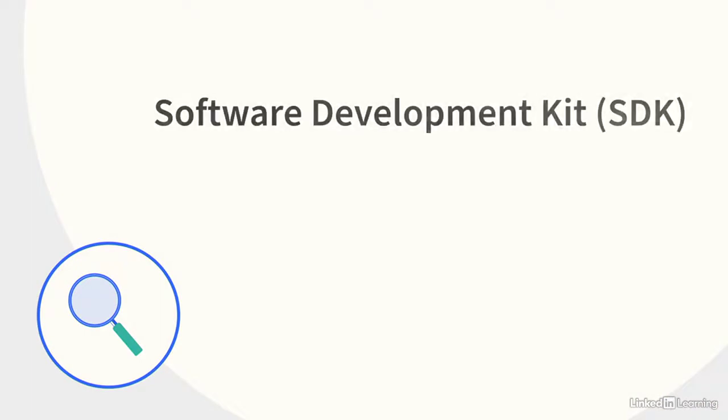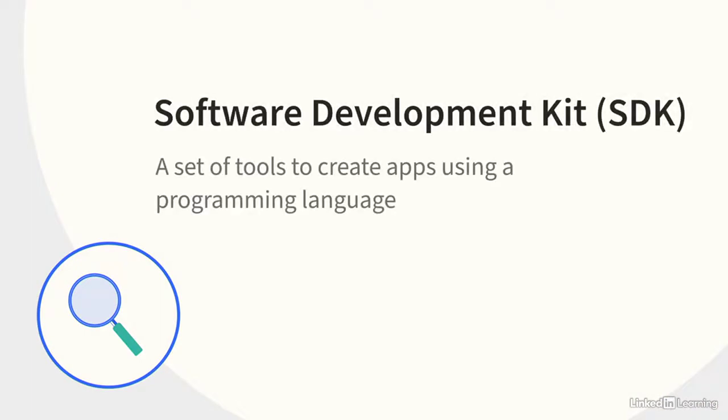Another term: SDK. An SDK is a software development kit, or a set of tools for creating apps using a particular programming language. An SDK is usually centered around an application where the actual coding and testing takes place. The SDK is like the programmer's workshop, where they have all the tools and resources they need to build an app. For example, if a developer wants to make an app for iPhones, they need to use the tools inside the iOS SDK, which is provided by Apple, to make their code work on an iPhone.